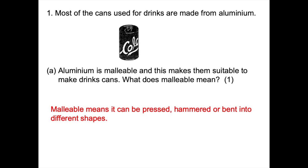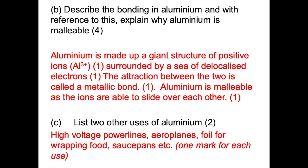For parts B and C: you're asked to describe the bonding in aluminium and explain why it's malleable. Aluminium is made up of a giant structure of positive Al3+ ions — one mark. These ions are surrounded by a sea of delocalized electrons — second mark. A metallic bond is the attraction between the ions and the delocalized electrons — third mark. Aluminium is malleable because the ions are able to slide over each other — fourth mark. For part C, two other uses of aluminium could include high voltage power lines, aeroplanes, foil for wrapping food, saucepans, etc. — one mark for each use.